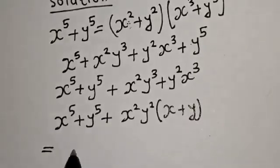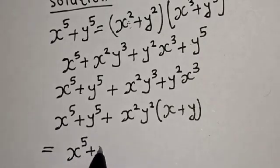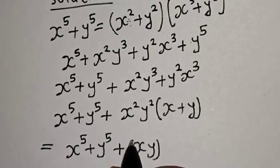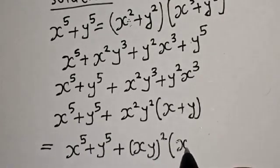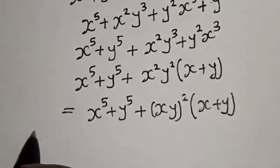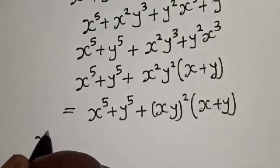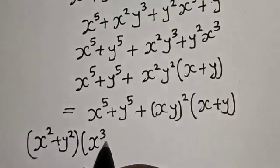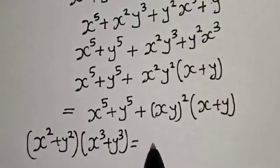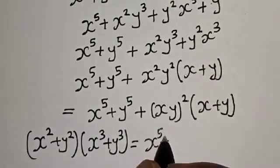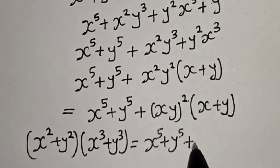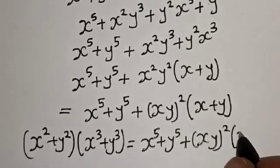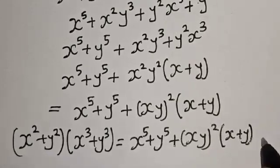This simplifies to s raised to power 5 plus y raised to power 5 plus x y squared multiplied by x plus y. Then x cubed plus y cubed is equal to x to the power 5 plus y to the power 5 plus xy squared multiplied by x plus y. Let's call this equation 3.